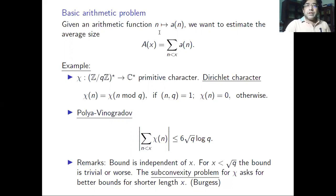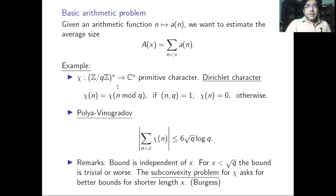We have an arithmetic function n → a(n), which you can think of as a sequence, and we're looking at the summatory function A(x) = Σ a(n). A basic example: start with a primitive Dirichlet character χ of the group (ℤ/qℤ)*, then define χ(n) to be the character value of n mod q if gcd(n,q) = 1, and zero otherwise.